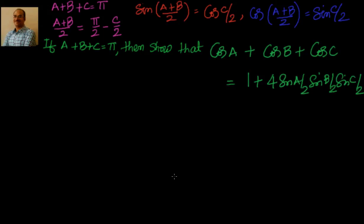So, we have a problem here. If a, b, c are angles of a triangle, then show that cos a plus cos b plus cos c is equal to 1 plus 4 sin(a/2) sin(b/2) sin(c/2). Now we will go ahead with our approach. First, we apply the transformation on this.